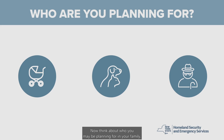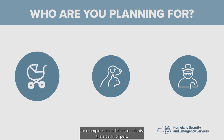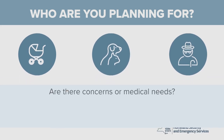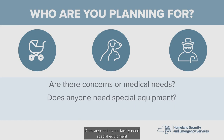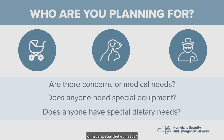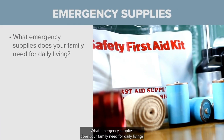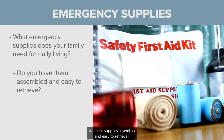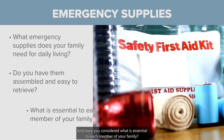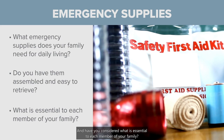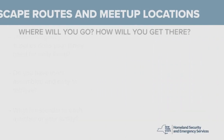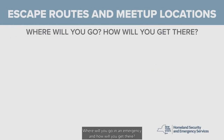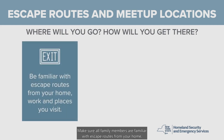Think about who you may be planning for in your family — such as babies or infants, the elderly, or pets. Are there concerns or medical needs that need to be addressed? Does anyone in your family need special equipment or have special dietary needs? What emergency supplies does your family need for daily living? Are these supplies assembled and easy to retrieve? Have you considered what is essential to each member of your family, such as a favorite stuffed animal or toy for a young child? Where will you go in an emergency and how will you get there? Make sure all family members are familiar with escape routes from your home, work, and places you visit.